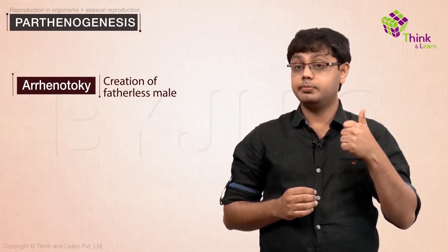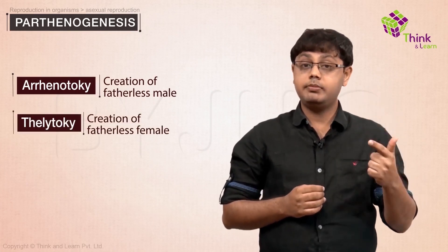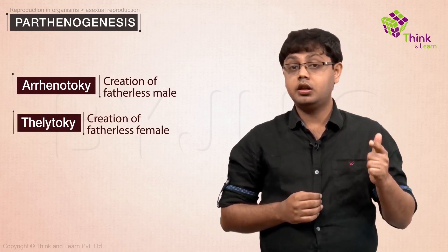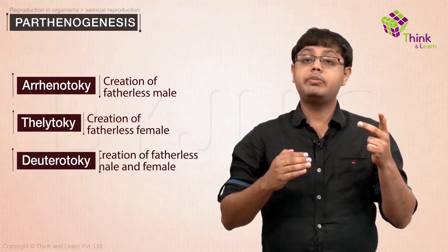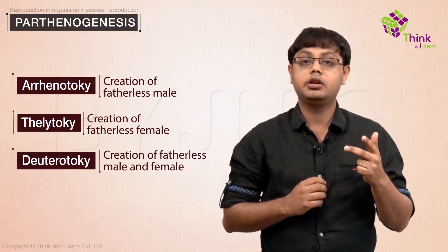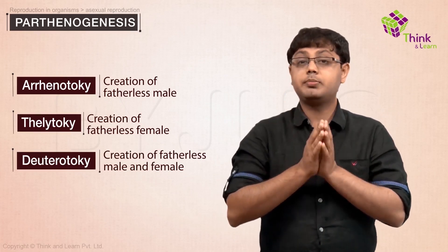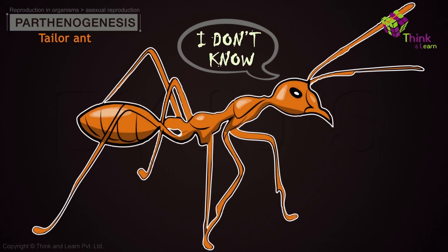To summarize, parthenogenesis is divided based on the end product. Arrhenotoky involves the creation of fatherless males. Thelytoky is the creation of fatherless females. There is a third type as well, termed deuterotoky or amphitoky, which is the production of both males and females by unmated females. This is very rare and thought to be exhibited by Taylor ants, though a lot more research needs to be done to prove if this is indeed true.